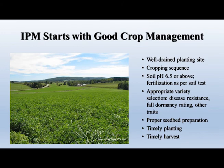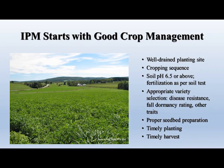IPM starts with good crop management. As with any crop, you want a well-drained planting site, good rotation within fields, and maintaining alfalfa at a pH of at least 6.5. Use an appropriate variety with disease resistance, good fall dormancy ratings, and potentially potato leafhopper resistance. Ensure good seedbed preparation, timely planting and harvesting at proper stages. This creates a healthier crop better able to withstand pest pressure.